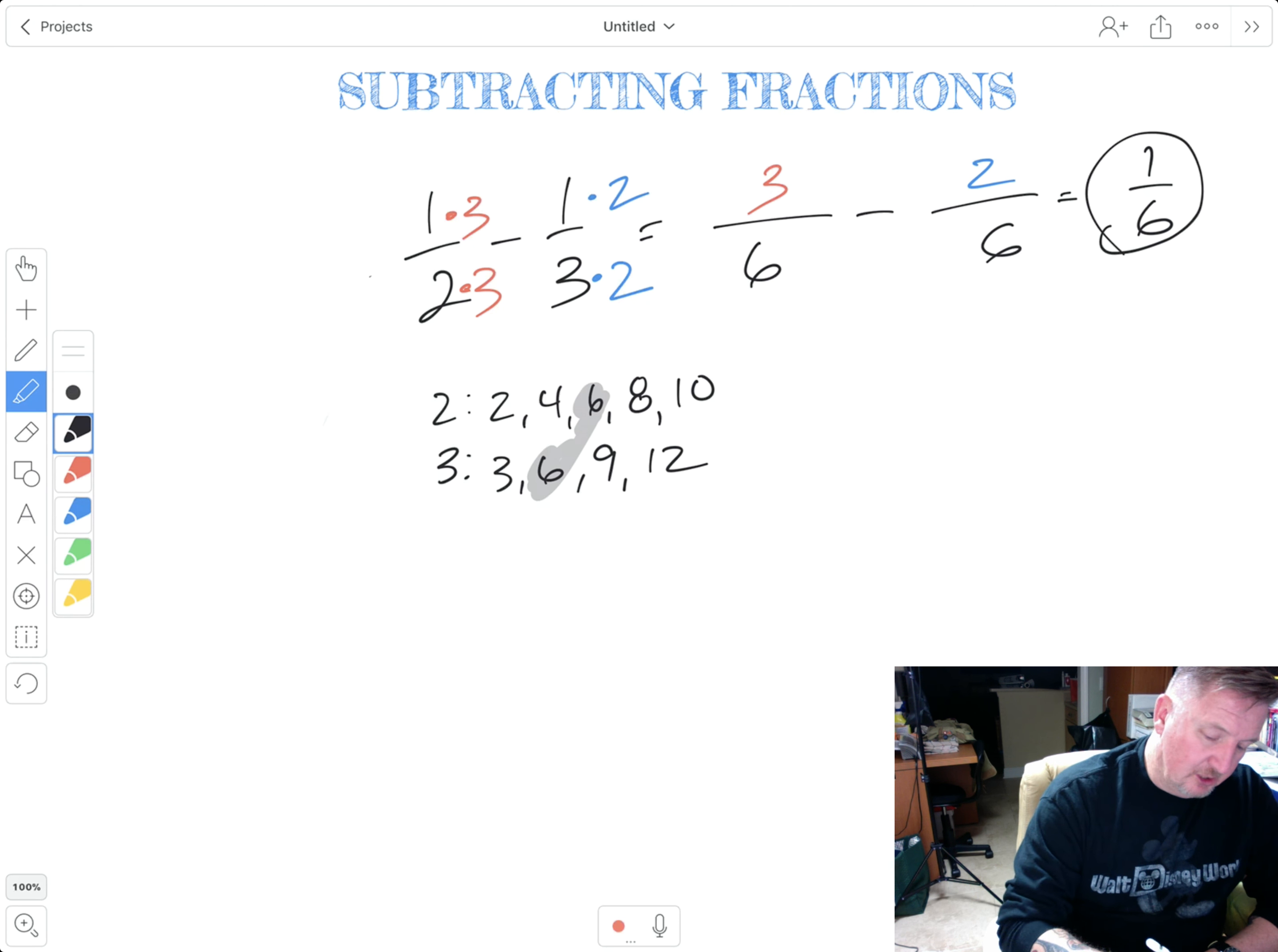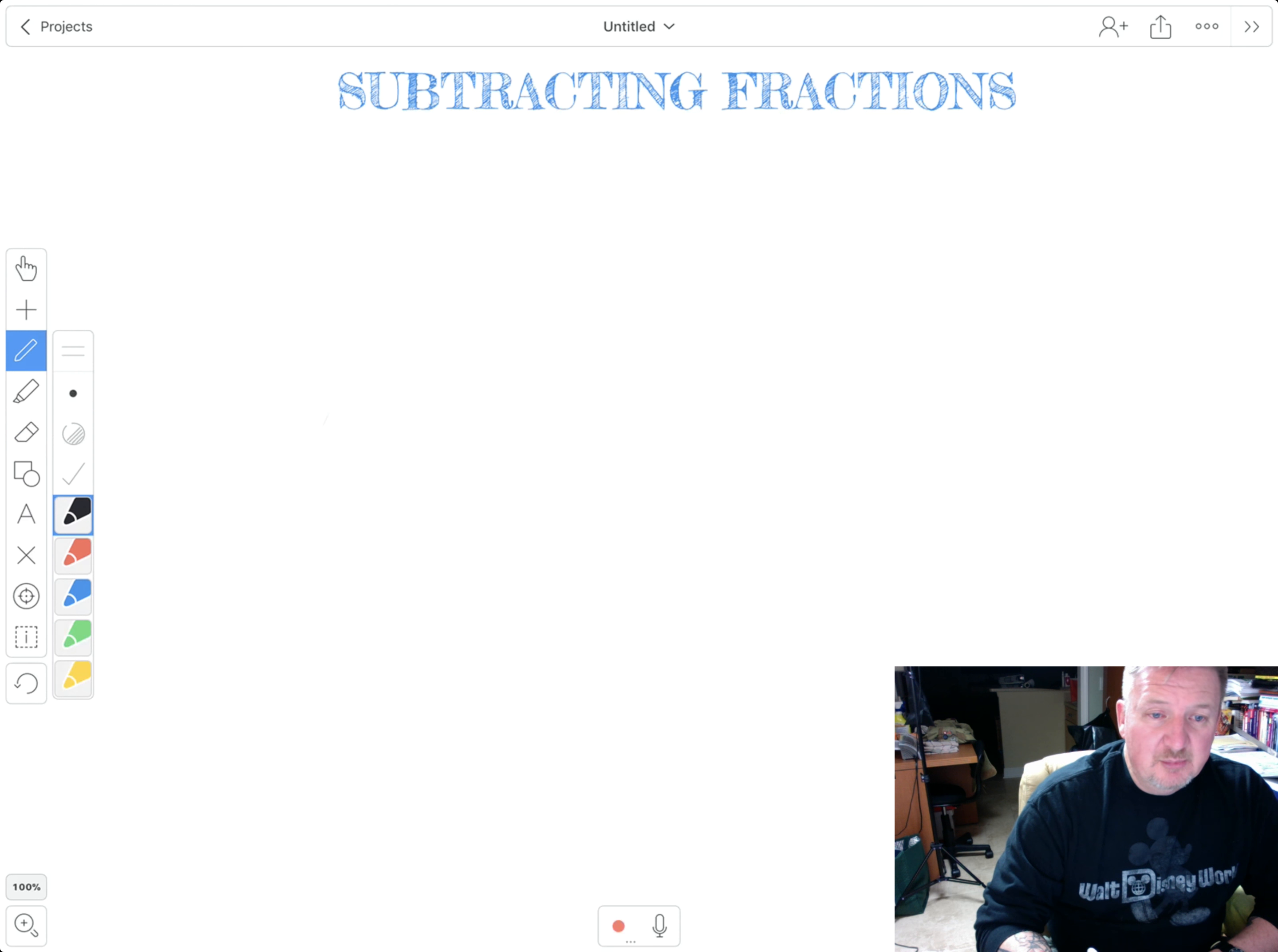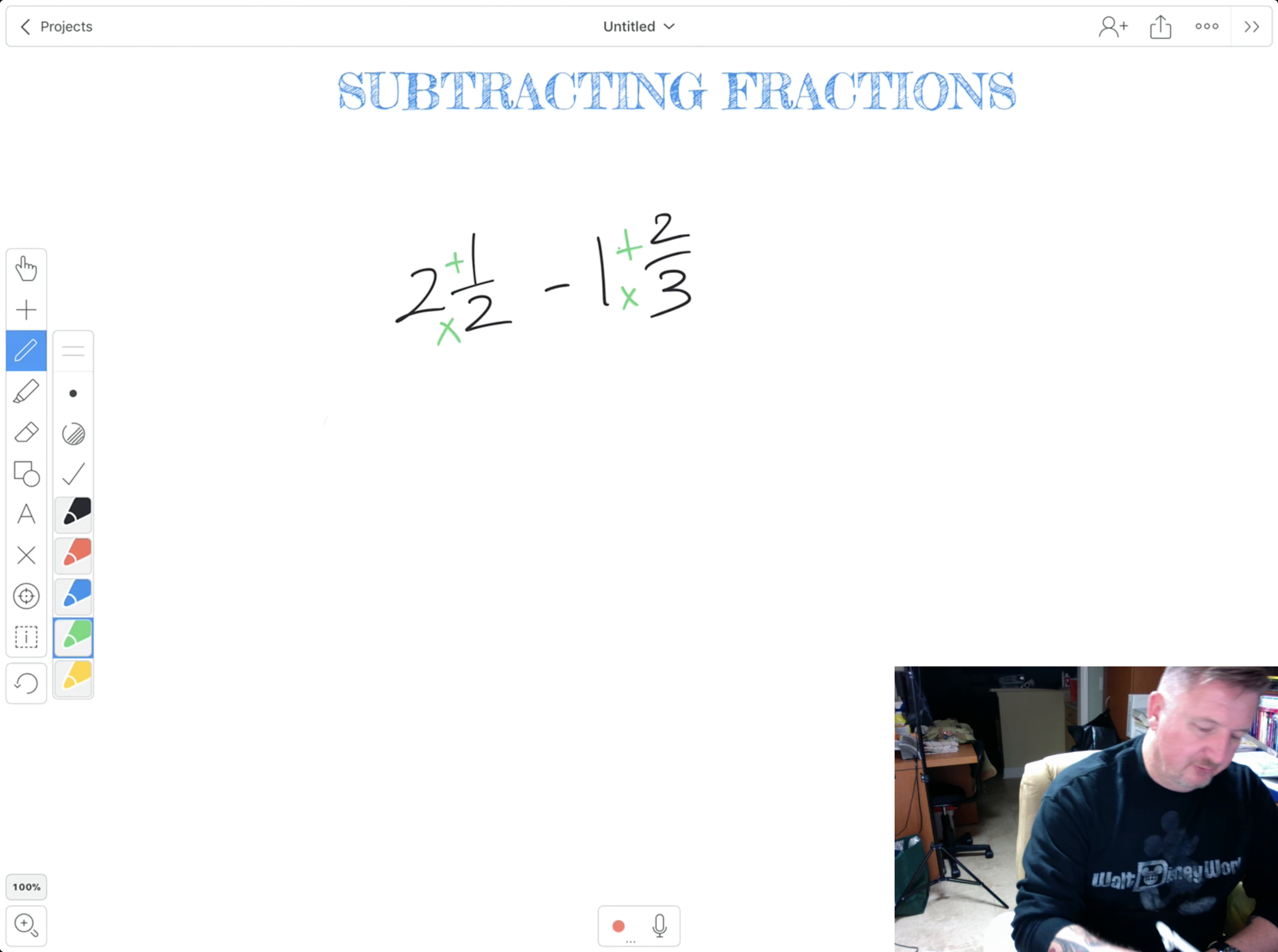There we go. That is subtracting those. I got a couple more examples like mixed numbers and whatnot. So let's go ahead and get these knocked out and I'll let you guys go. So next example, and I'm just going to do the one. I'm going to do the double. Two and one half minus one and two thirds. I think this has some borrowing involved, but we're just going to go ahead and let's just say we're going to multiply both of these and get them into improper fraction form.